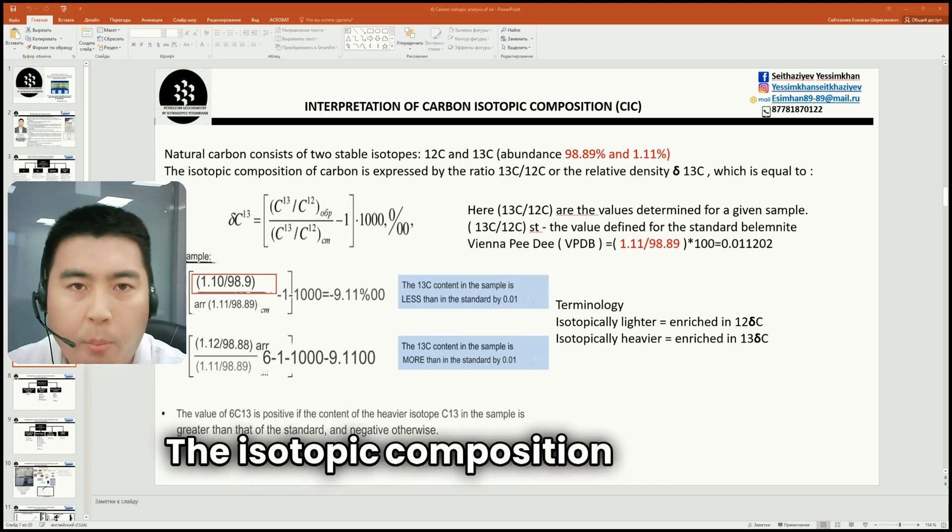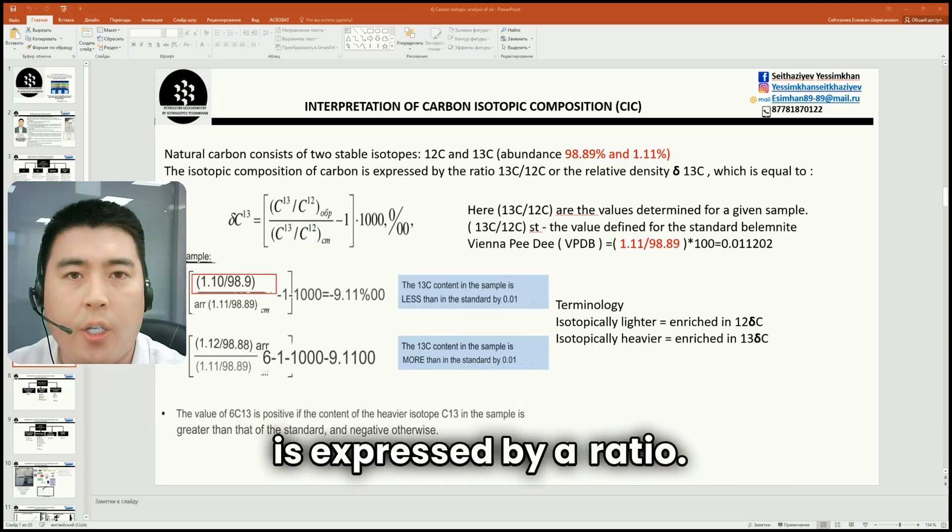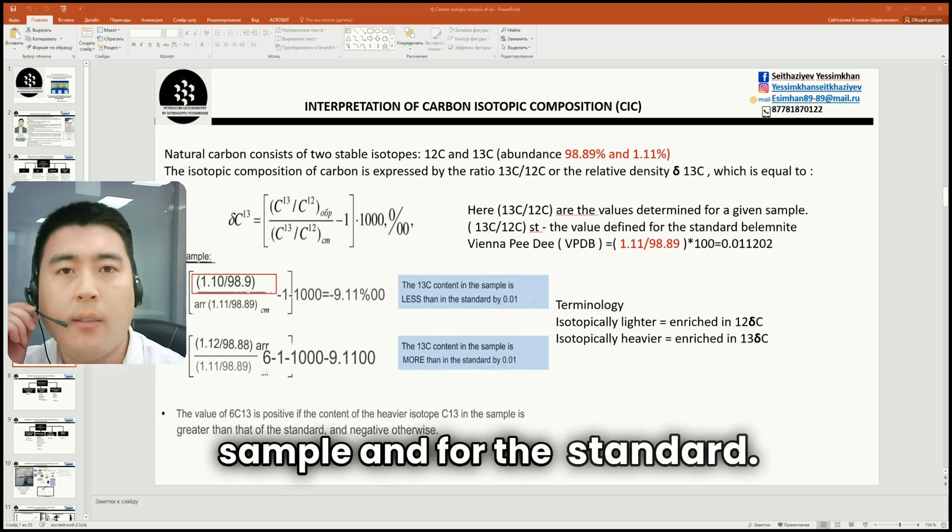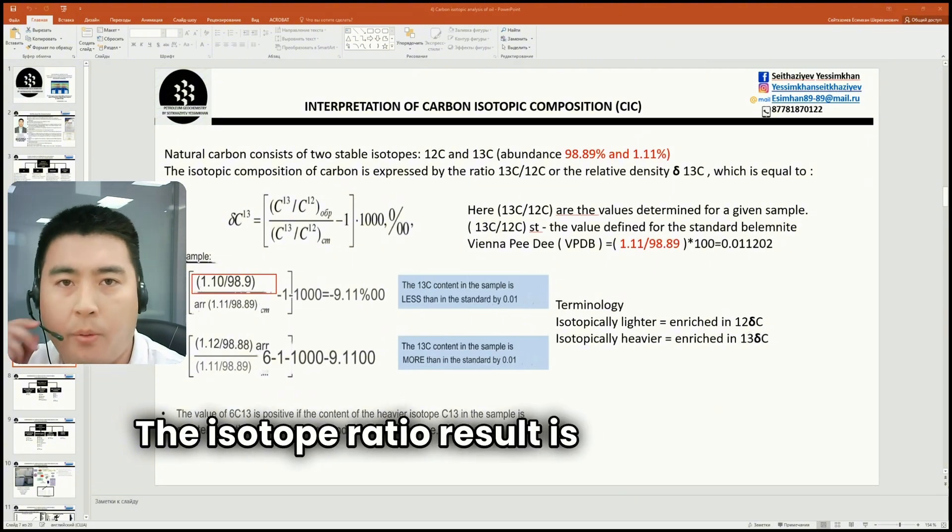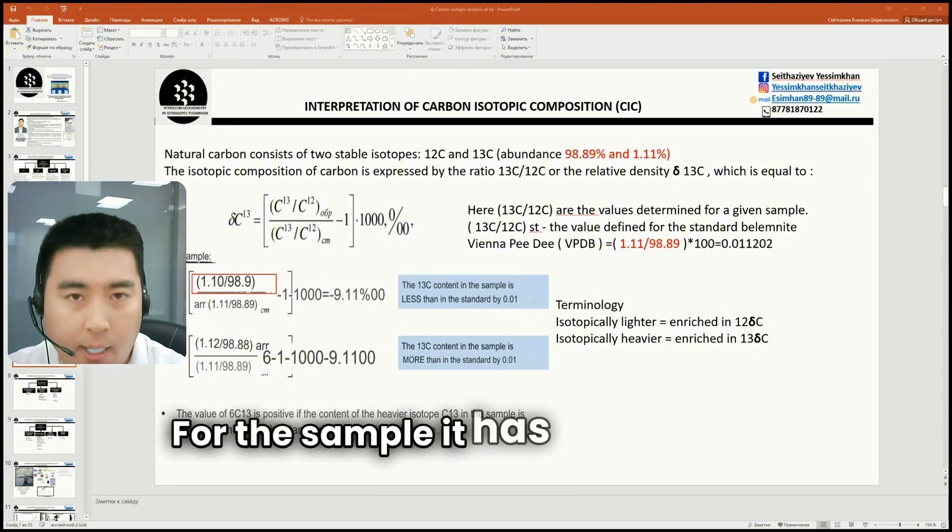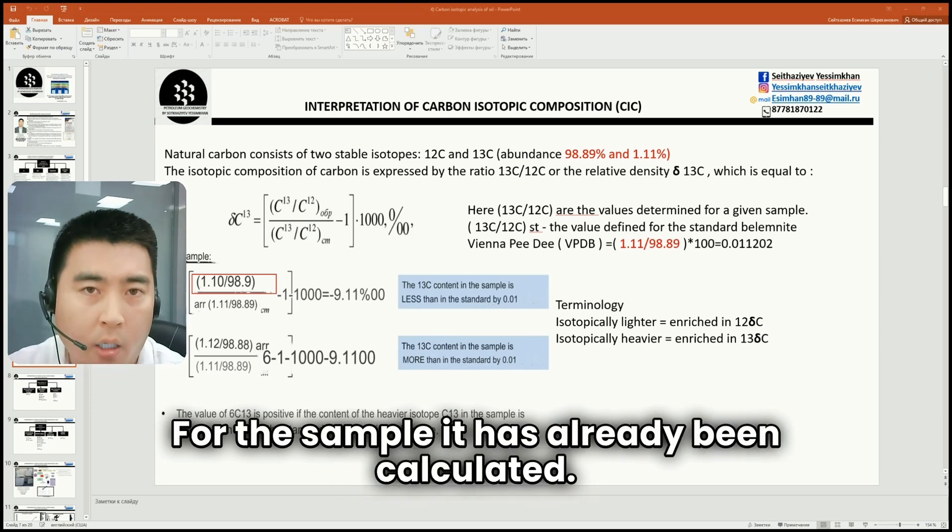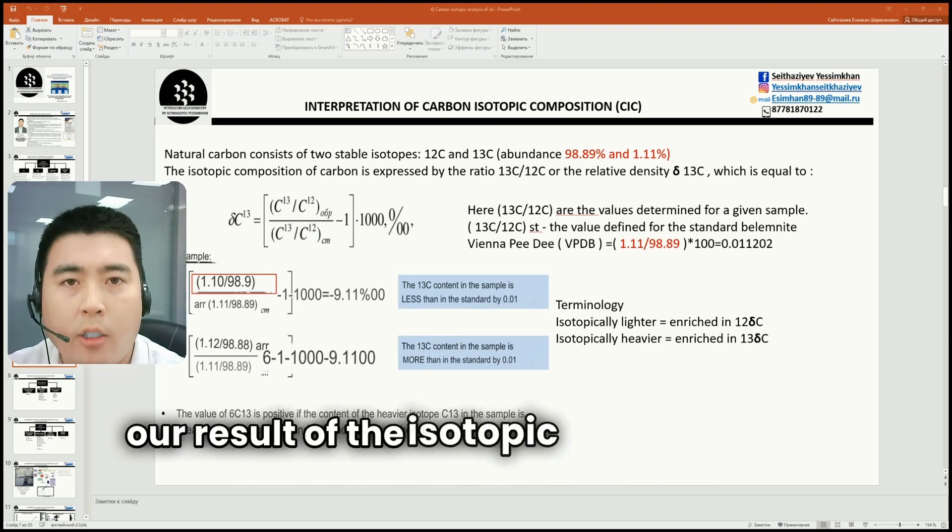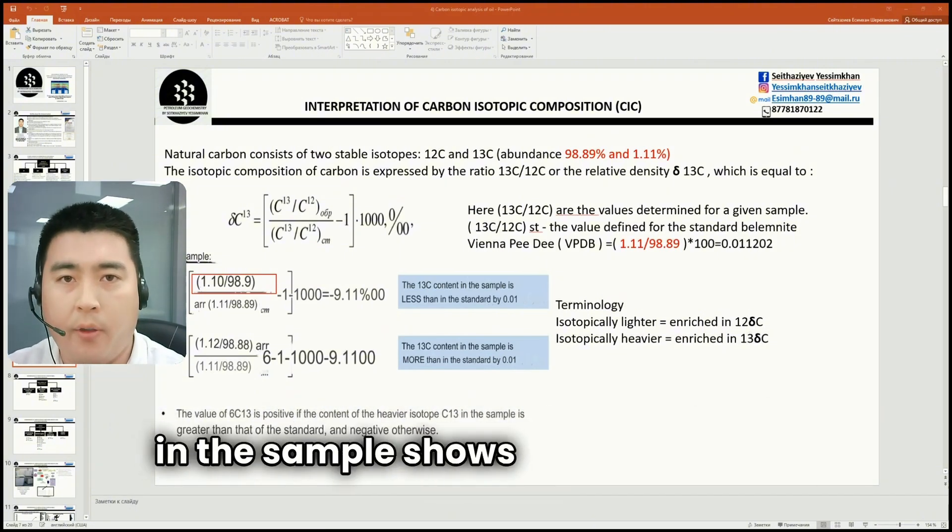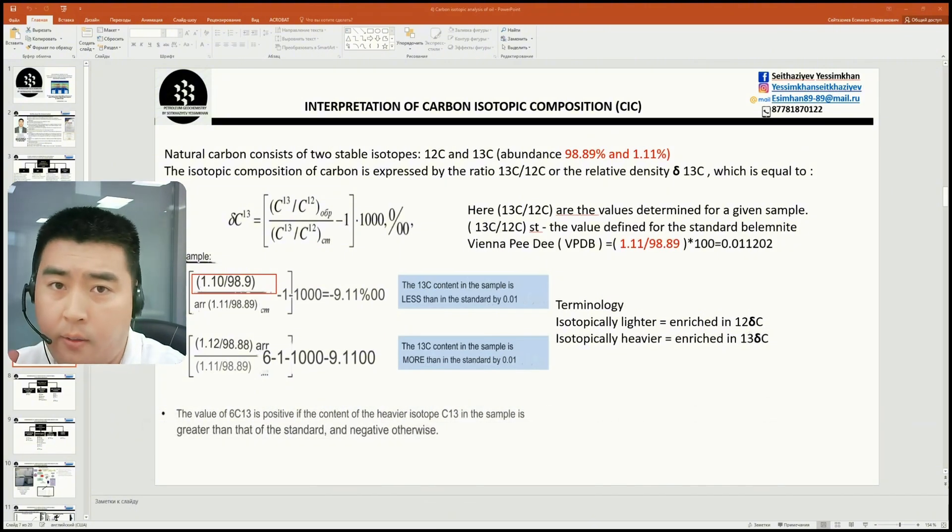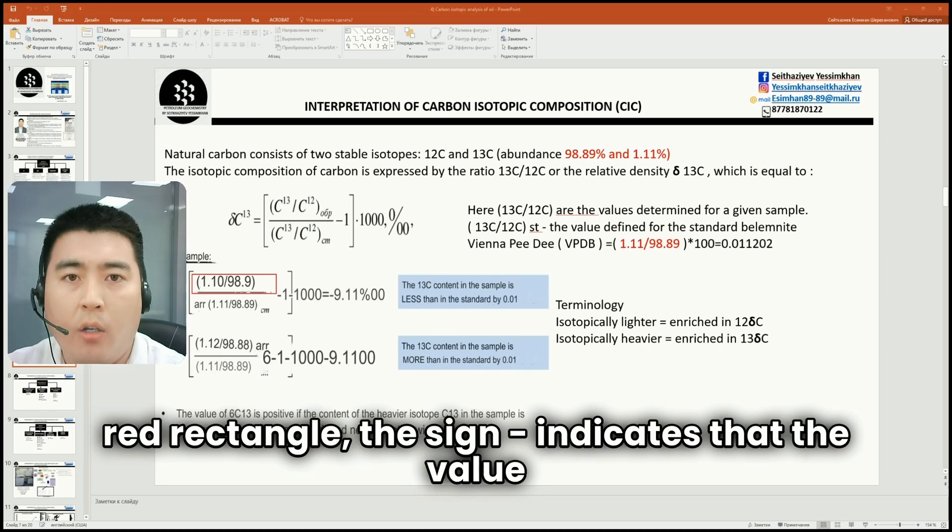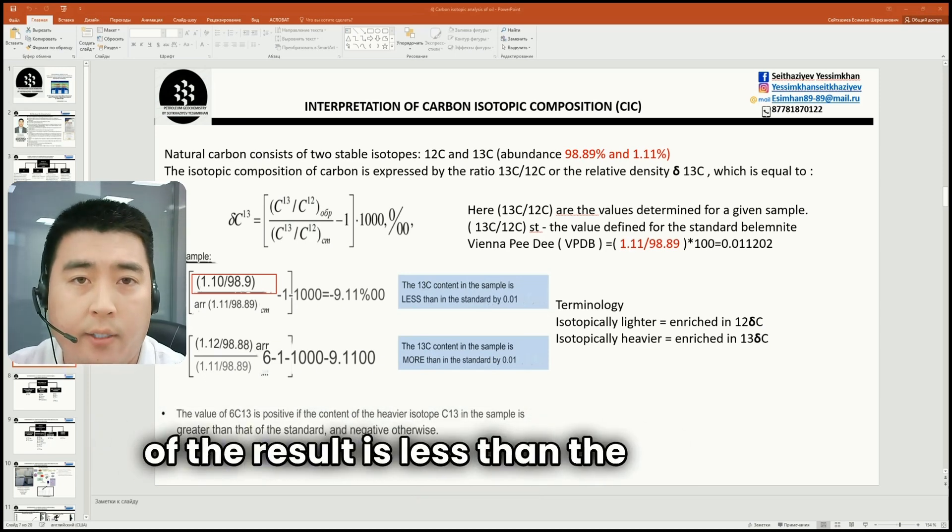The isotope composition of carbon is expressed by a ratio. Here, there are ratios for the sample and for the standard. The isotope ratio result is presented as per mille. For the sample, it has already been calculated. We use 0.011. For example, our result of the isotope composition of carbon in the sample shows the ratio as shown in the rectangle. The minus sign indicates that the value of the results is less than the standard.